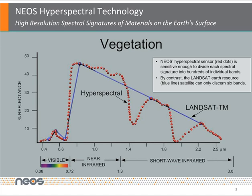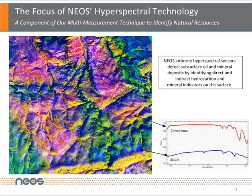Using these spectral signatures is an important component of the NEOS multi-measurement technique. NEOS can identify natural resources by searching the earth's surface for tell-tale spectral signatures, such as minerals, hydrocarbons, or mineral indicators of hydrocarbons.